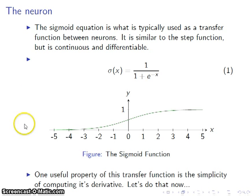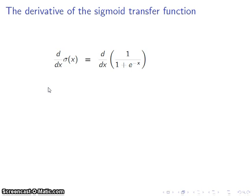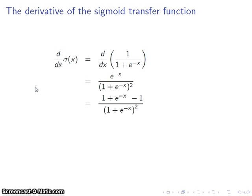So what we'll go ahead and do is compute the derivative of this, which we'll be able to just plug and play later when we need it. This is the definition right here — sigma of x is 1 over 1 plus e to the negative x. So let's go ahead and take the derivative. By the quotient rule gives us e to the negative x over 1 plus e to the negative x squared. I'm going to go ahead and add and subtract 1 in the numerator here because I'd like to group these smartly.